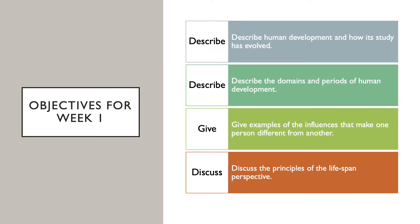Each week you will have a list of objectives for the week. Some modules will be one week and others will be two or more weeks. The learning objectives for the first week are to describe human behavior and how its study has evolved, describe the domains and periods of human development, give examples of the influences that make one person different from another, and discuss the principles of the lifespan perspective.